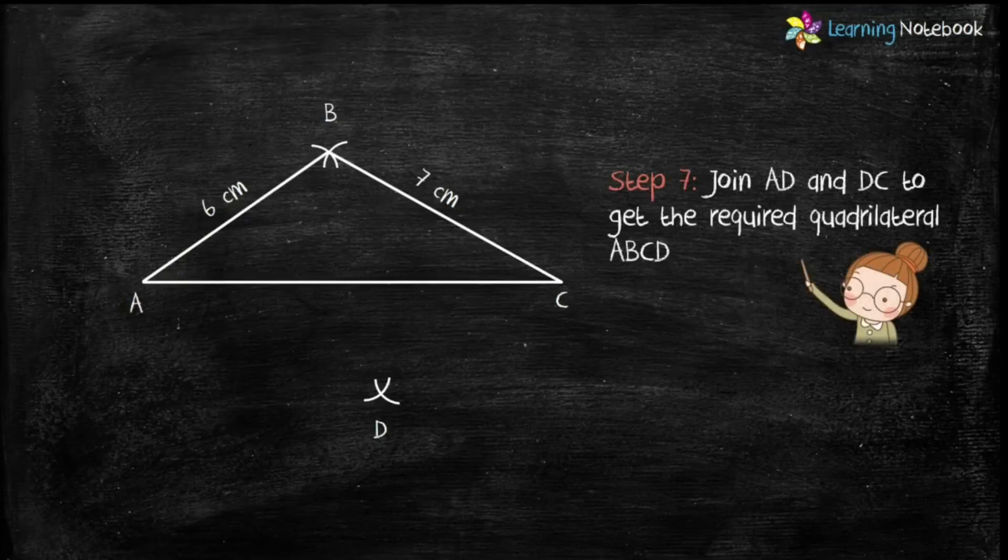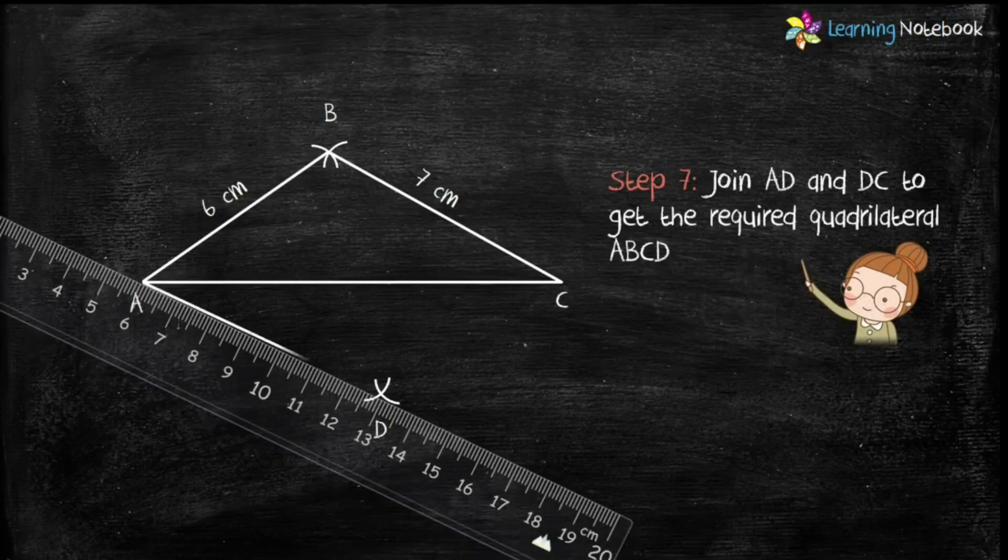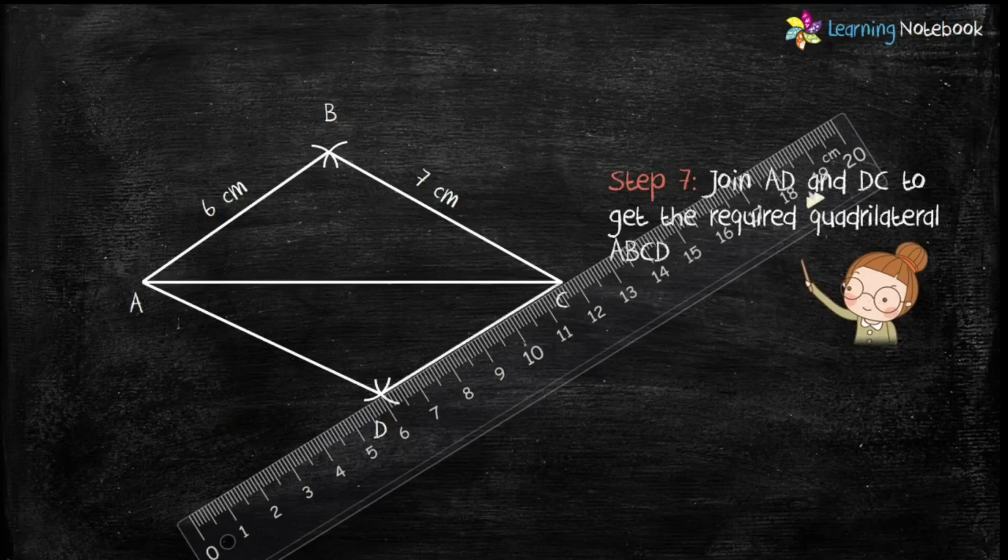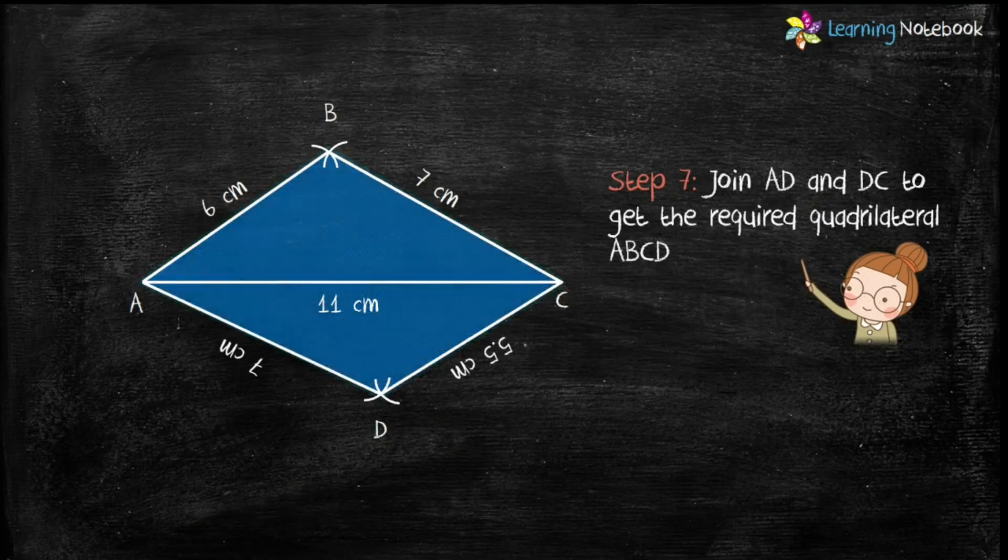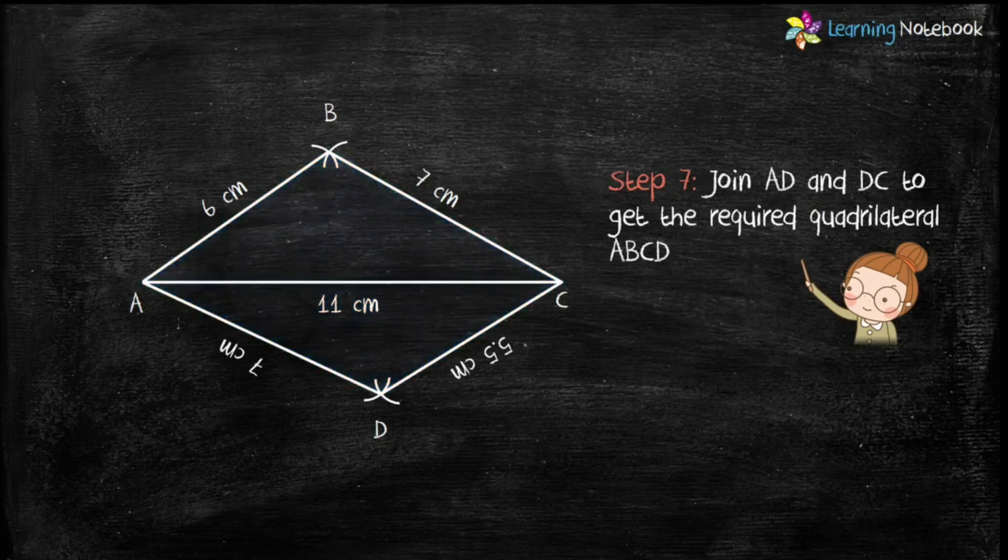And in the last step, join AD and DC to get the required quadrilateral ABCD. Students, also mark the length of the sides constructed.